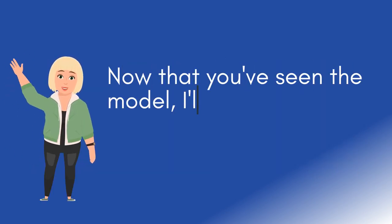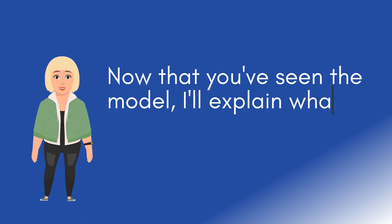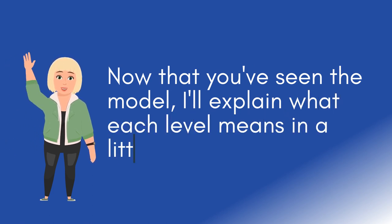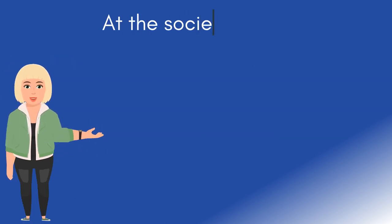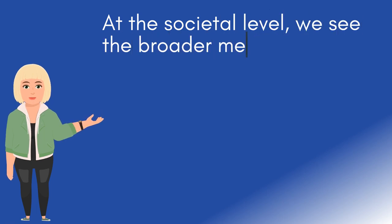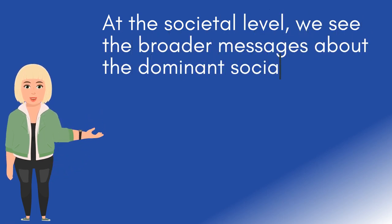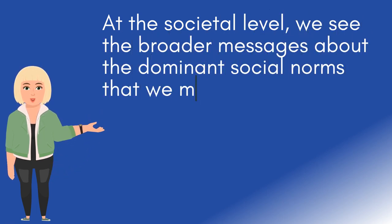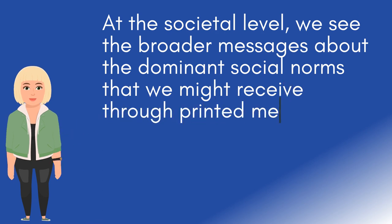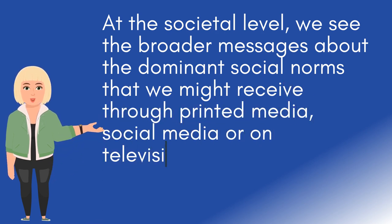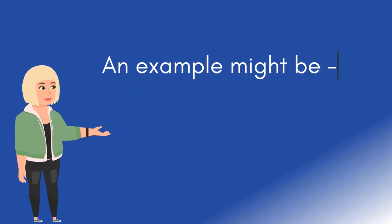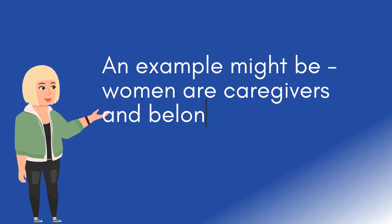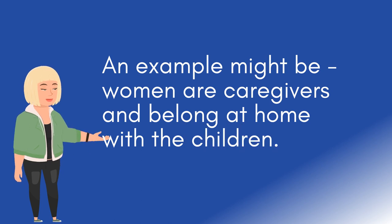Now that you've seen the model, I'll explain what each level means in a little more detail. At the societal level, we see the broader messages about the dominant social norms that we might receive through printed media, social media or on television. An example might be: women are caregivers and belong at home with the children.